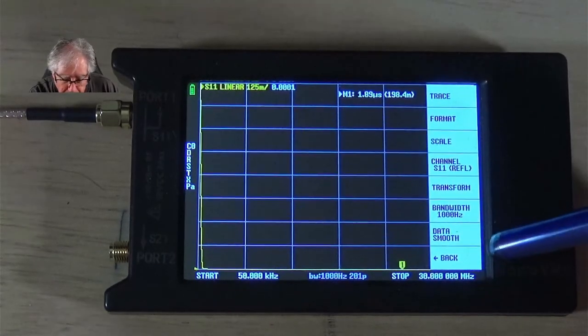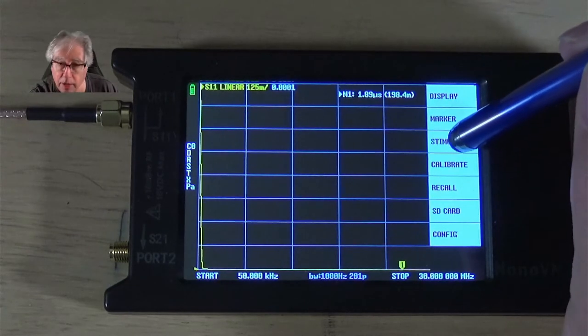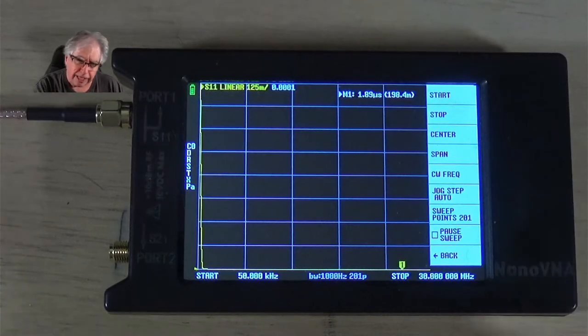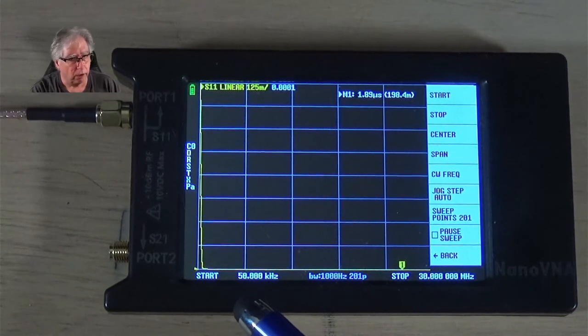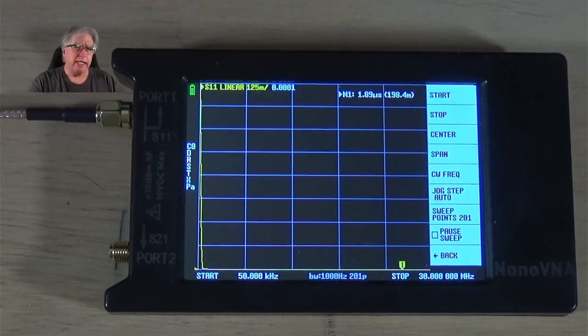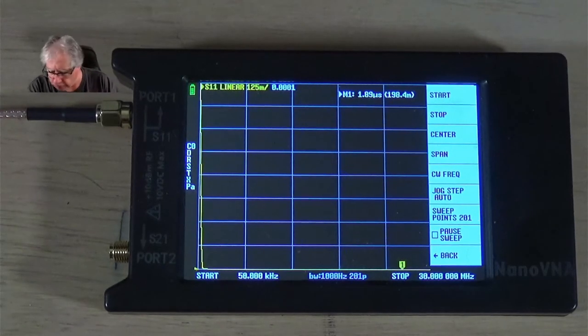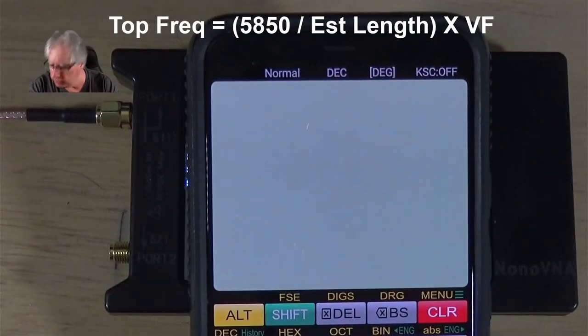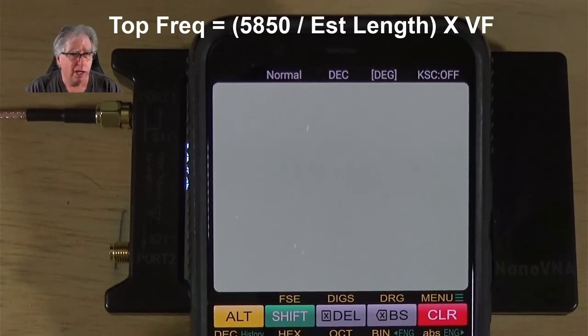Now, I need to set the stimulus, or what my frequency ranges are going to be. So, for this, it gets a little funky. So, my starting frequency, I want to keep as low as I can, which is 50 kilohertz. But, for my stop frequency, I need it to be high enough in order to actually see where the opening, the short or the open, is occurring. So, I found a formula.